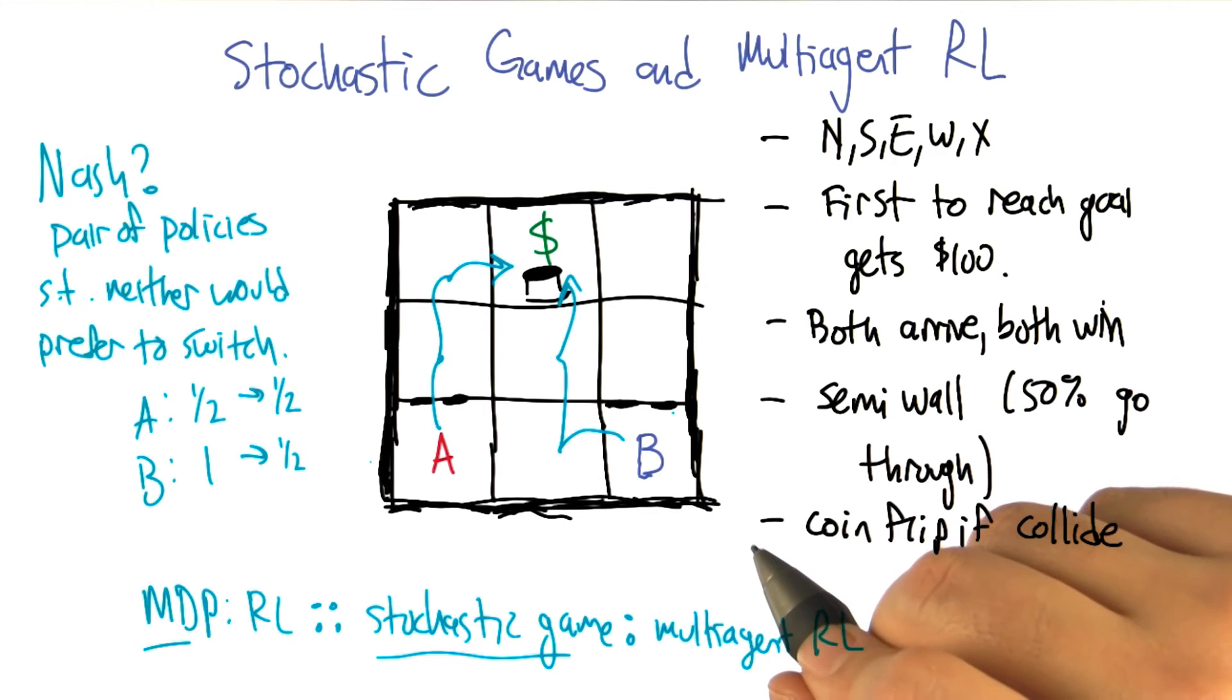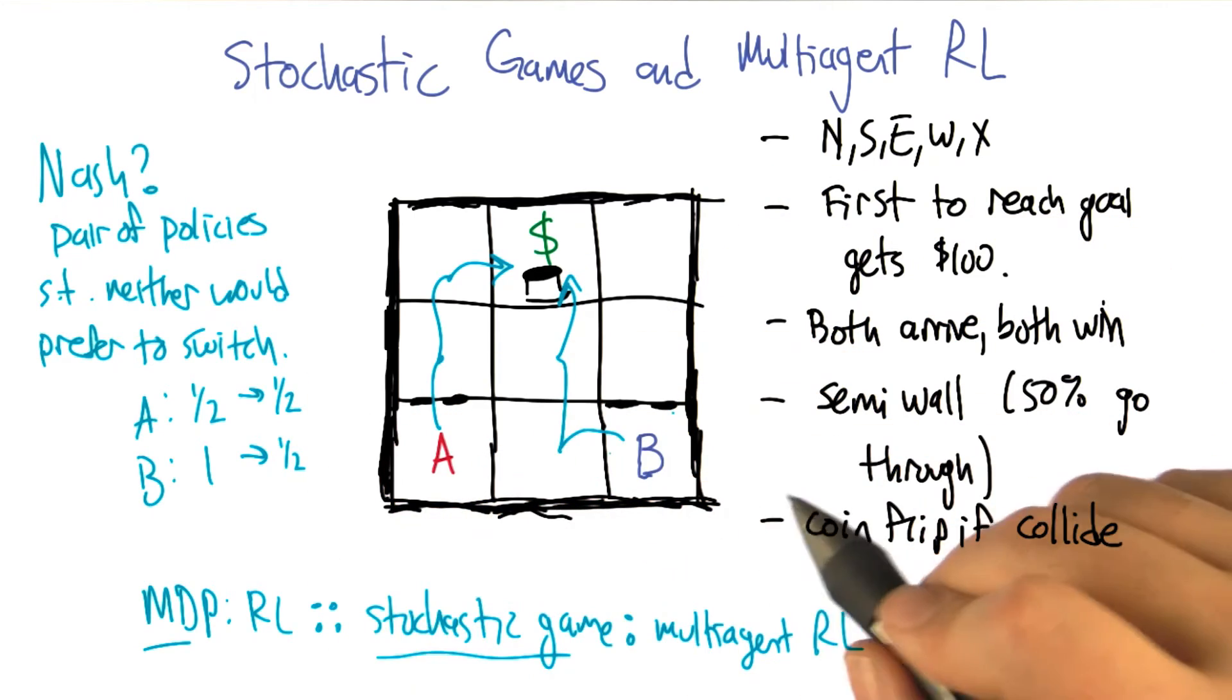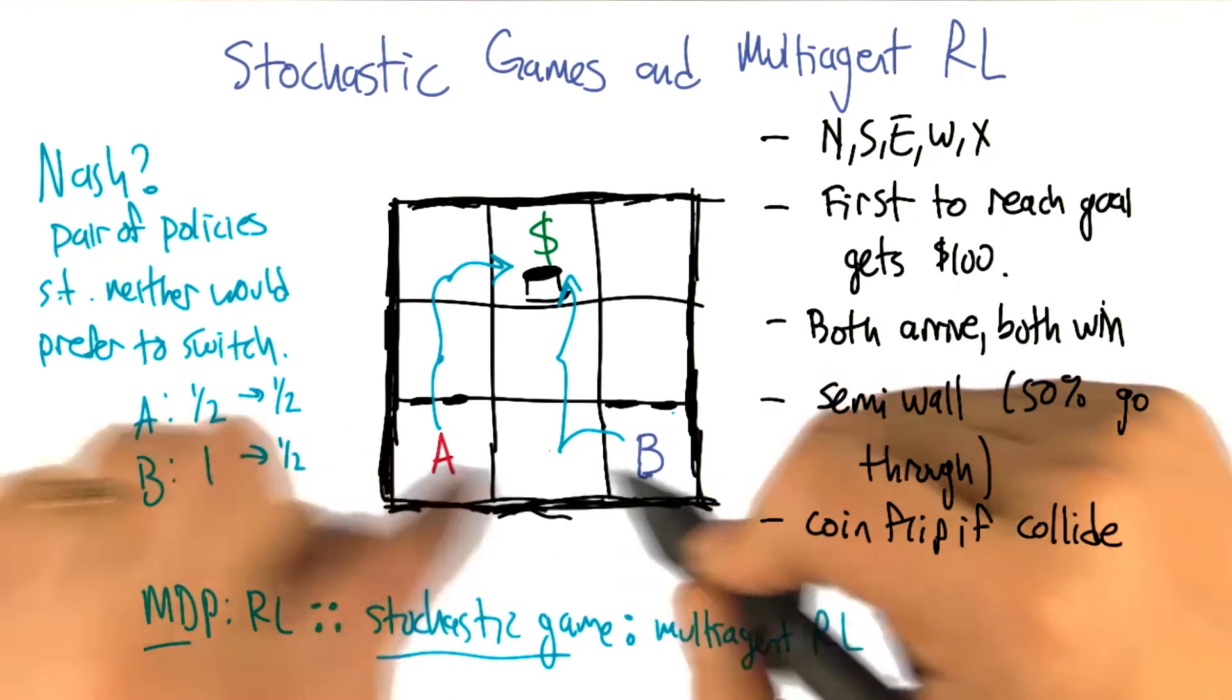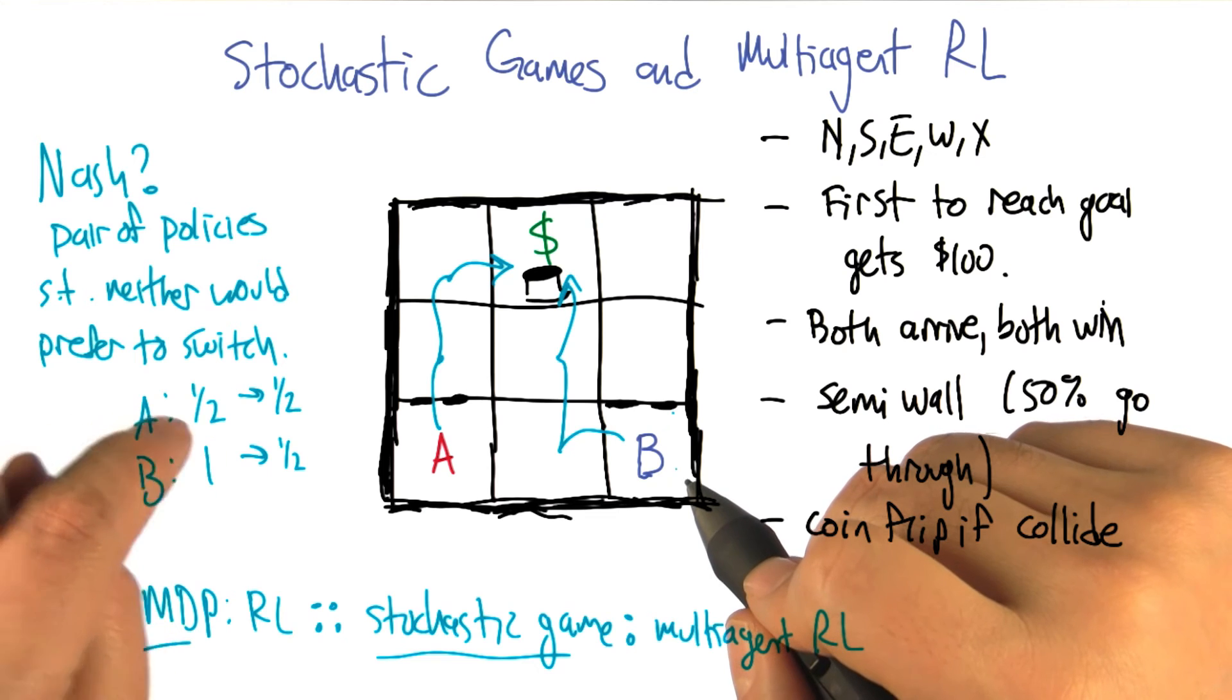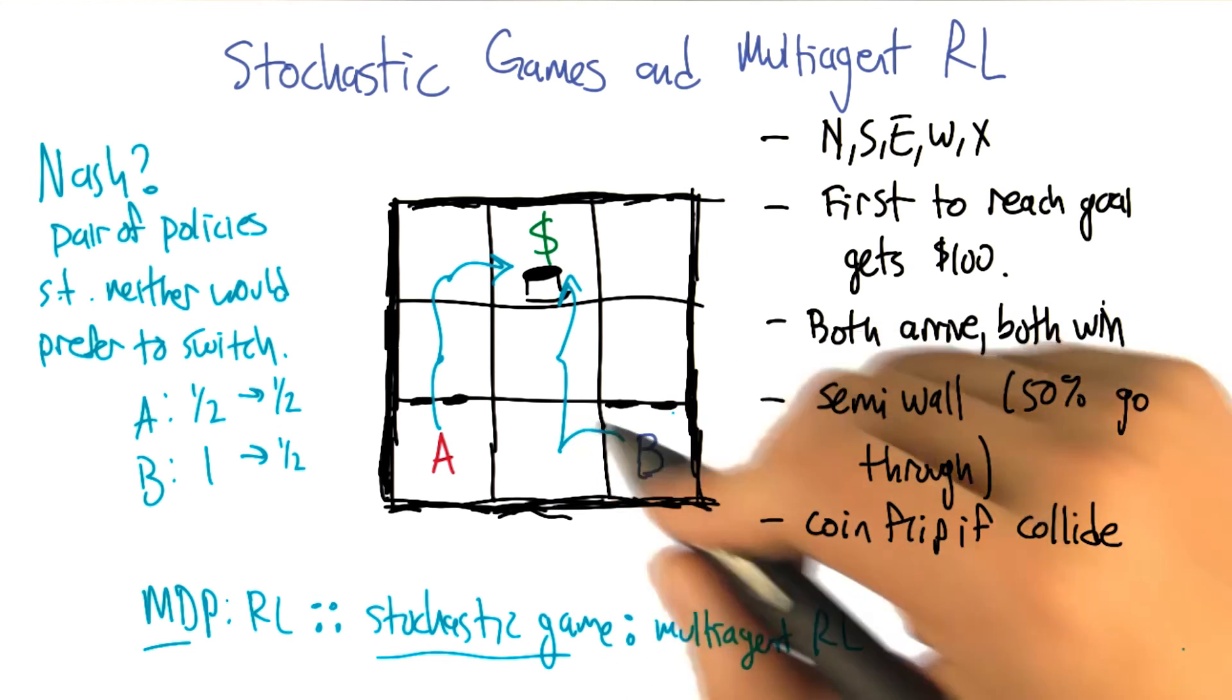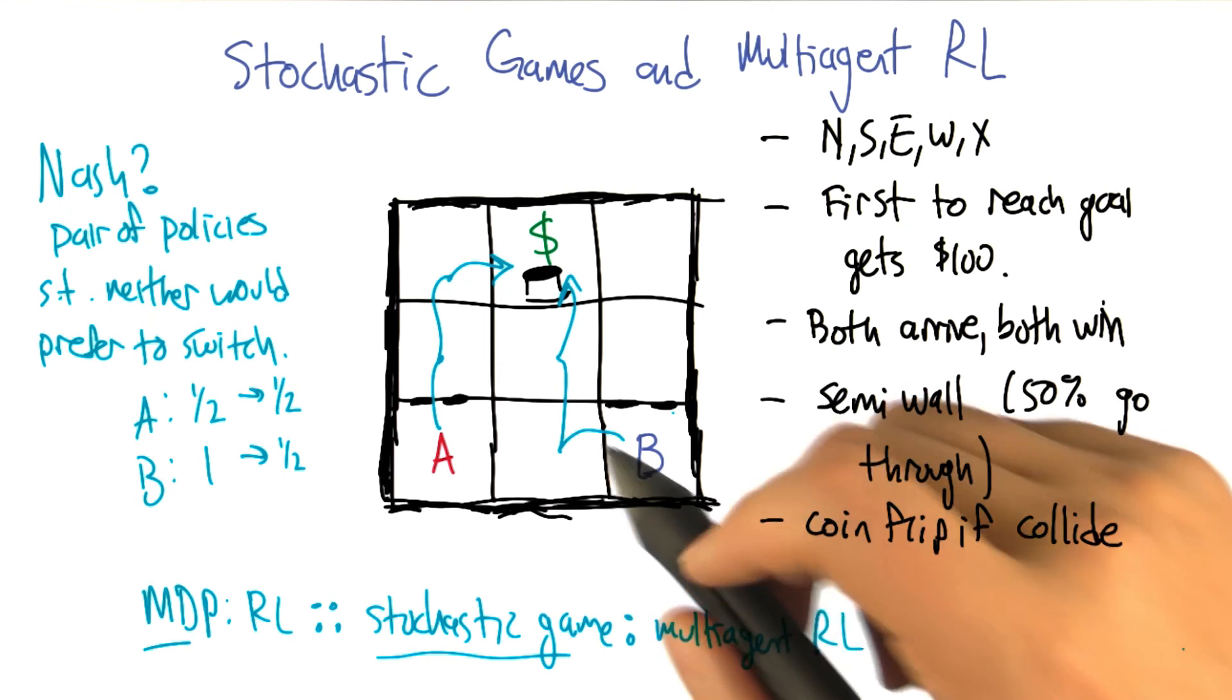So, so yeah. So there's one Nash equilibrium where B takes the center, another one where A takes the center. I guess if we do this coin flip thing, it works out this way. If it's the case that if we change the rules here, so that if they collide, neither of them gets to go, then both trying to go to the center is not a Nash equilibrium anymore, because you can do better by actually going up the semi wall. Right. And so if collision means nobody goes through, then suddenly you'd want to do the other thing. Exactly. Where one of you goes through the semi wall and one goes the direct way.